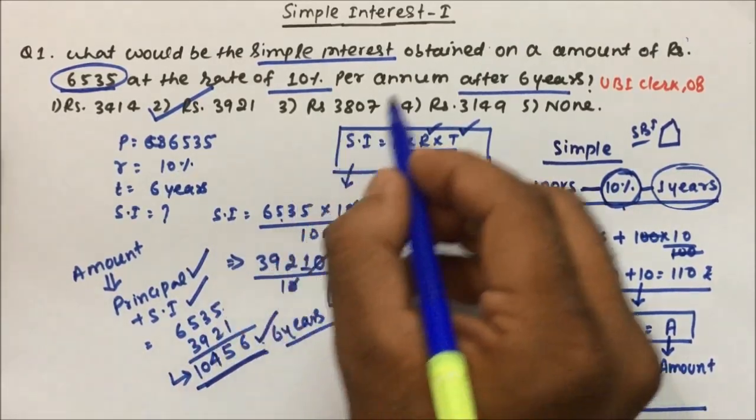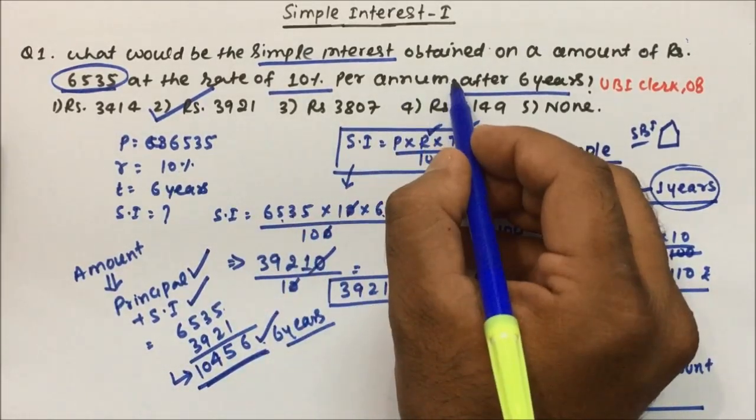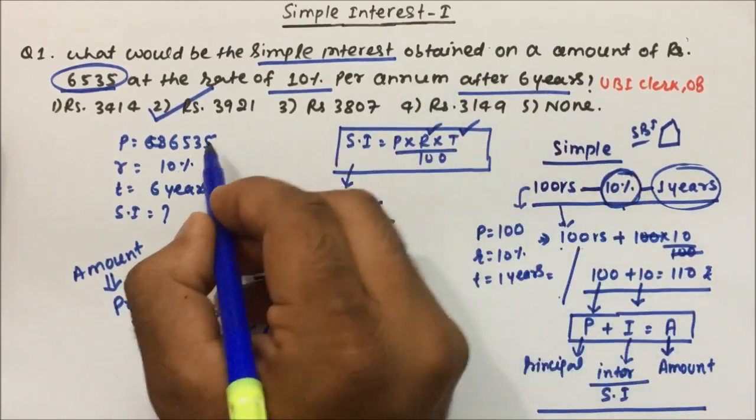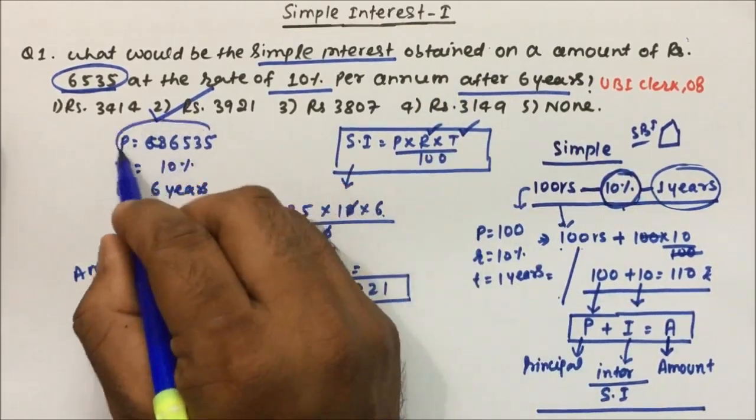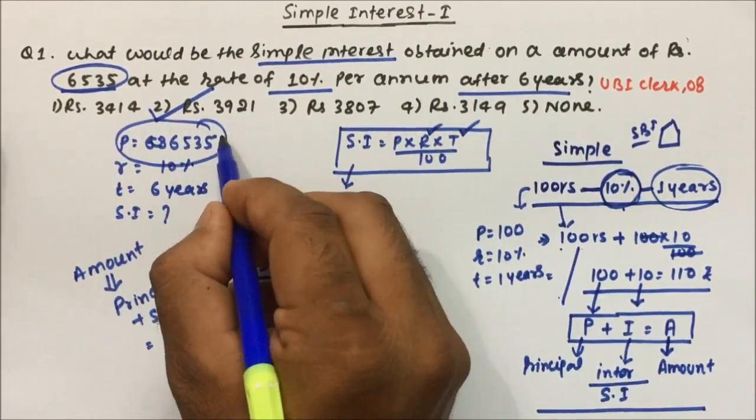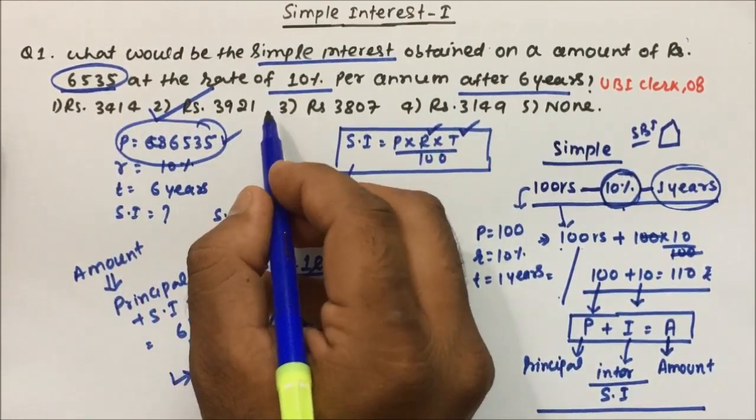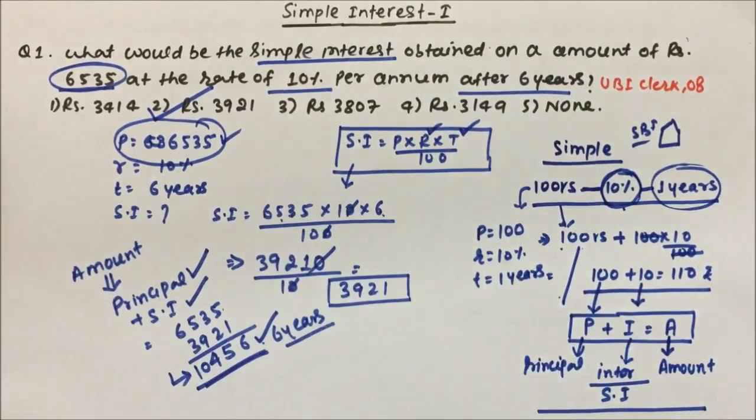If the same question asks for the amount, the amount equals principal plus interest: ₹6535 + ₹3921 = ₹10456. That is the amount the bank will give you after 6 years. Remember the difference between amount, simple interest, and principal — whatever money you invest is your principal.